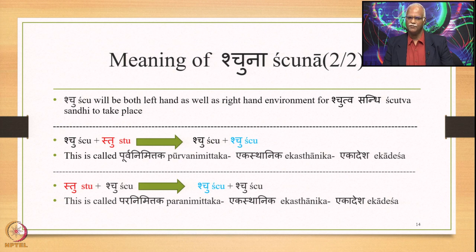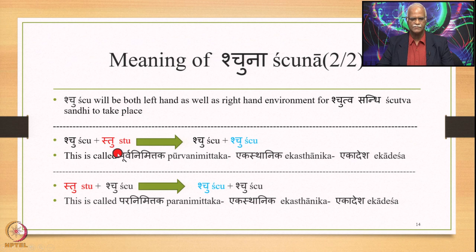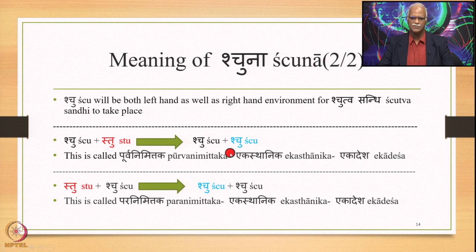Shchuhu will be both left-hand as well as right-hand environment for Chutva Sandhi to take place. So we have Shchuhu plus Stuhu, for example. In this case, Shchuhu is Purva and Shchuhu is Para, Shchuhu is the Nimitta, Shchuhu is the Sthani or the Kargi. Shchuhu applies, there is association of this Stuhu, the Sthani, with the Nimitta, and so Shchuhu substitutes this Stuhu by Shchuhu. The output we get is Shchuhu plus Shchuhu. This is called Purvanimittaka Ekasthanika Ekadesha.